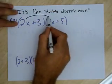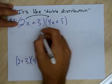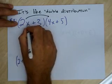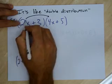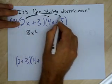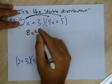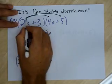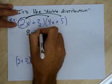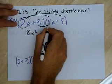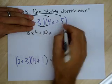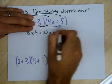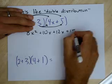We'll start with the 2x. 2x times 4x: 2 times 4 is 8, x times x is x squared. Now I have to distribute the 2x to the 5: 2x times 5 is 10x. Done distributing this term. Now let's distribute the 3 through: 3 times 4x is 12x, positive. 3 times 5 is 15.